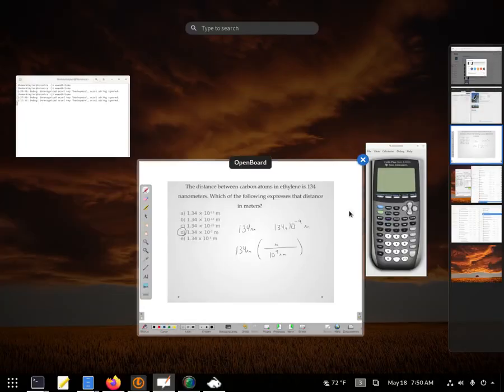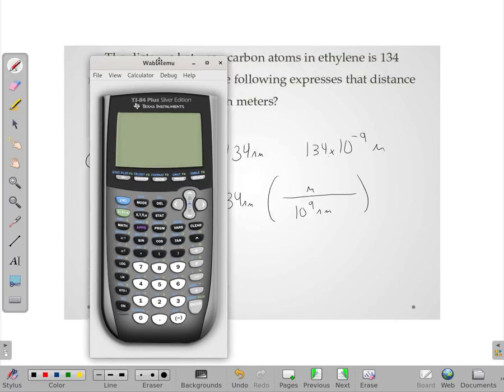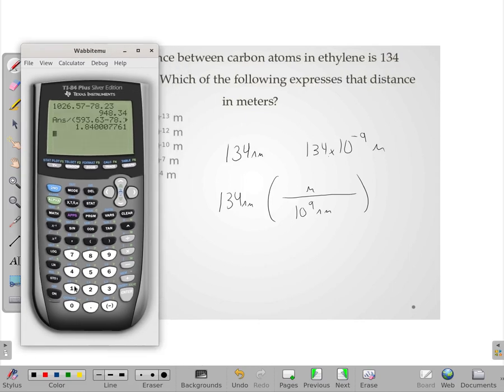We can actually just put this into our calculator. And what I mean by that, we really could just do 134 divided by 1 times 10 to the 9th.